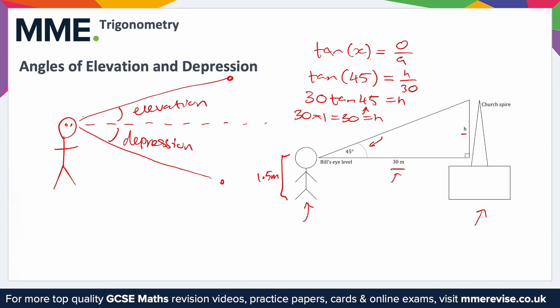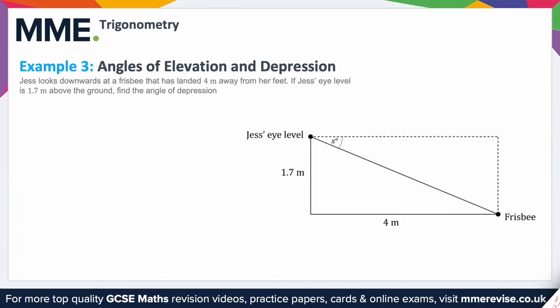We're not quite done — this is not the height of the church spire, as this was calculated from Bill's eye level. So we need to add the height that Bill's eye level is above the ground. All we need to do then is 30 plus 1.5, and that gives us 31.5 meters — meters because we used meters throughout, and we knew his eye level was in meters.